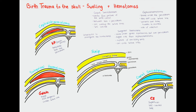The last one is subgaleal hemorrhage. The name gives us a clue — it's a collection of blood under the galeal aponeurosis, so subgaleal, but over the periosteum. Think galeal — Goliath. Galeal kind of sounds like Goliath, the giant who fights David in the Bible. Goliath is bigger, more dangerous, and can definitely cross suture lines. It's a bit of a silly mnemonic, but it helps remember that subgaleal hemorrhage is the worst of the three, located subgaleally — under the galeal aponeurosis.